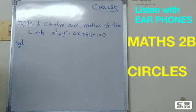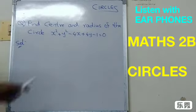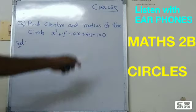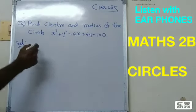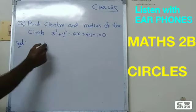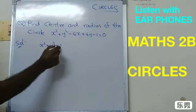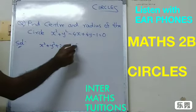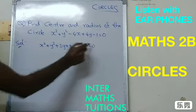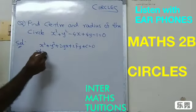First of all, I am telling you a trick - a tricky method to find center and radius of a circle when it is given in this type of standard form. What is standard form of a circle? x² + y² + 2gx + 2fy + c = 0. This is called standard form.